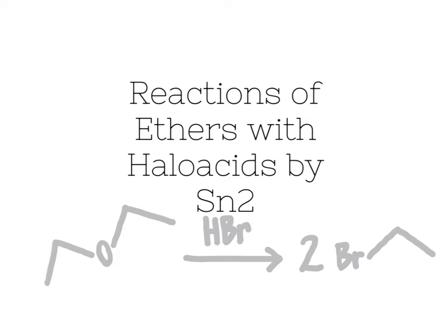When thinking about which mechanism applies, the SN2 mechanism is going to be in place when R and/or R prime are primary carbons — that is, the carbon directly bonded to the oxygen is a primary carbon, such as with diethyl ether. There's a primary carbon directly bonded to the oxygen on each side, so that half of the molecule is going to undergo an SN2 reaction with a halo acid.